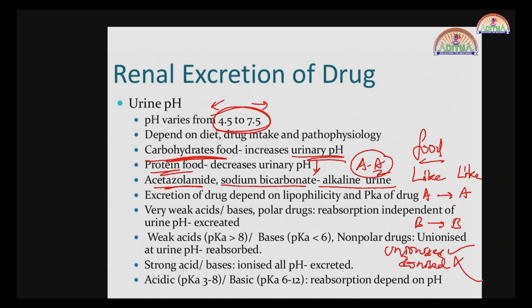Regarding urinary flow: reabsorption of polar drugs is affected by urine flow. Being polar and water-soluble, they are easily eliminated. For drugs with pH-sensitive reabsorption — where they can stay ionized or unionized — the ionization state affects reabsorption. Urinary flow increases with forced diuresis: administering an osmotic diuretic like mannitol or furosemide causes forced diuresis, increasing drug excretion.